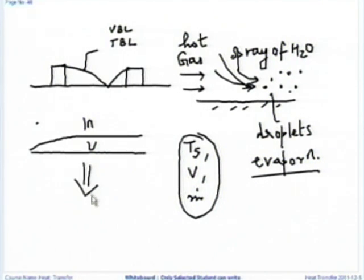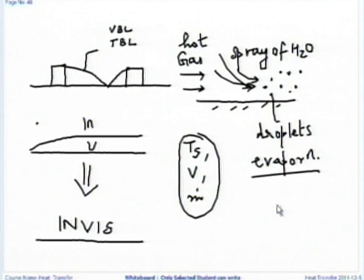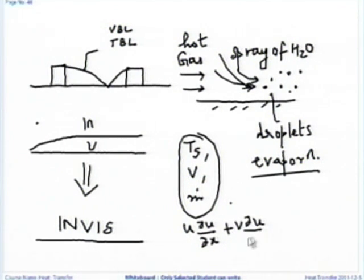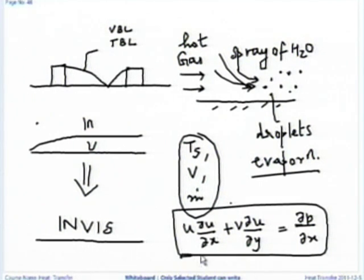If I do not take viscosity and write the momentum equation, I will have u ∂u/∂x + v ∂u/∂y = −∂p/∂x. To solve this problem, what people used to do is write the potential equation: u = ∂φ/∂x, v = ∂φ/∂y. The beauty of that is it reduces to ∂²φ/∂x² + ∂²φ/∂y² = 0 when substituted into the continuity equation.